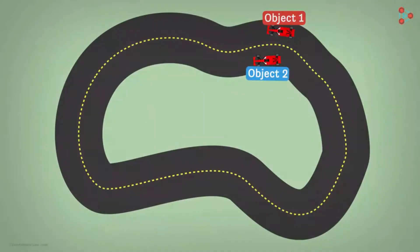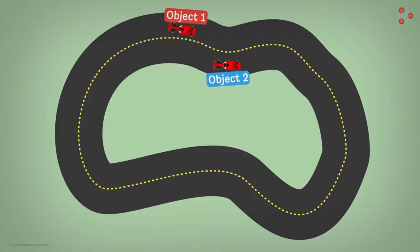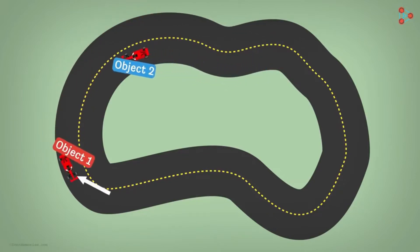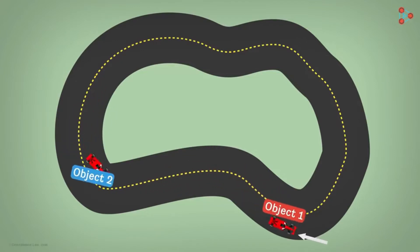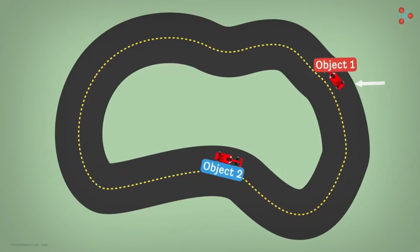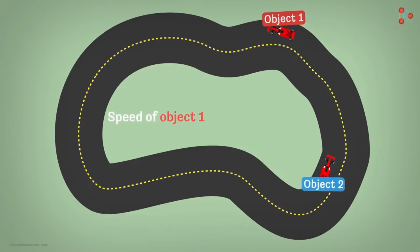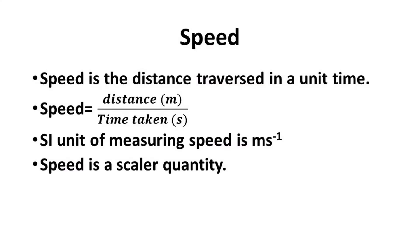Consider the above scenario out of object 1 and 2. Object 1 moves quicker than object 2. It shows that the speed of object 1 is higher than object 2. Basically, speed means how quick a movement happens. We define speed as the distance traversed in a unit time. The standard international unit of speed is meter per second. The equation for speed is: speed is equal to distance over time taken.